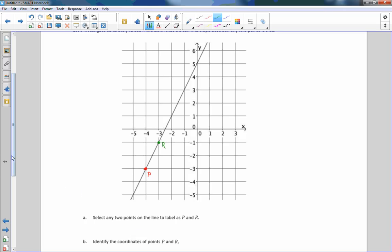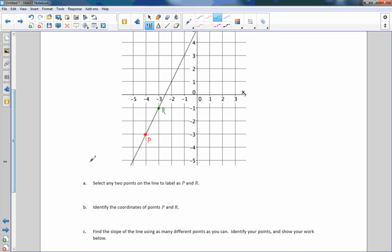B says to identify the coordinates of points P and R. So P is when we start at our origin and we have to go left one, two, three, four, and then down one, two, three to get to P. So P is negative four comma negative three. Left four down three. R is the point negative three, negative one.